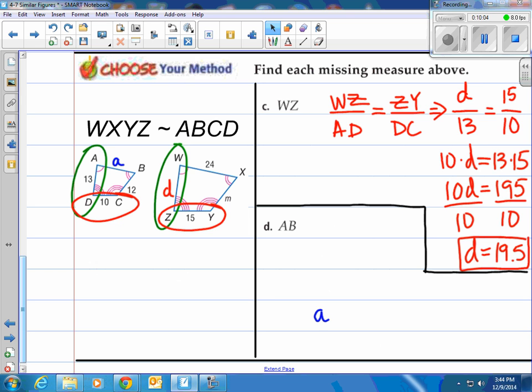Simply cross multiply and solve. When we cross multiply, 13 times 15 is 195. We divide by 10, we get 19.5. So D is 19.5, which is actually the WZ.